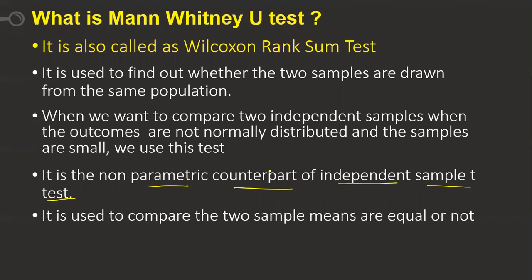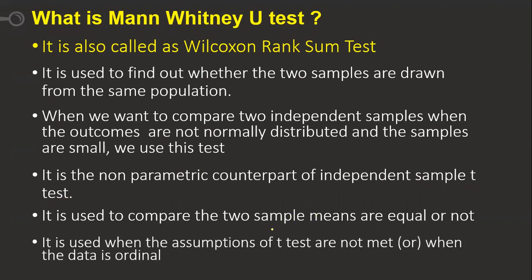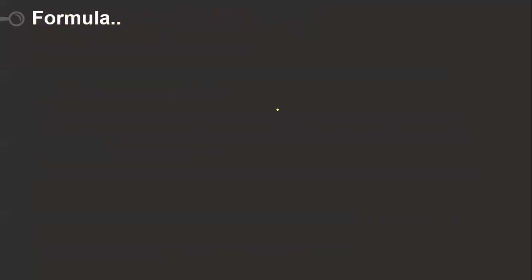The test is used to compare whether two sample means are equal or not. It is also used when the assumptions of the t-test are not met. Whenever an assumption for the t-test is violated, we can use the Mann-Whitney U test.